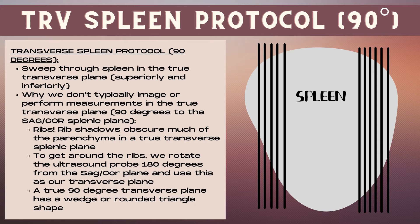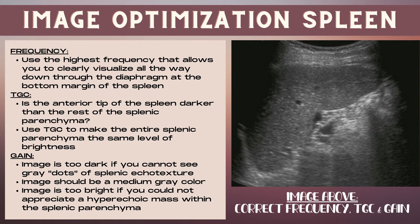A true 90-degree transverse plane produces a wedge or rounded triangle shape of the spleen. However, it is important to sweep through the splenic parenchyma in this 90-degree true transverse plane to ensure no masses or pathology are being overlooked. Sweep superiorly and inferiorly to the spleen — this will be exactly 90 degrees from the sagittal or coronal plane, and transverse to the spleen itself, not the body.